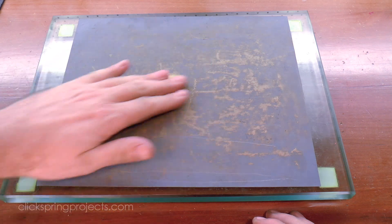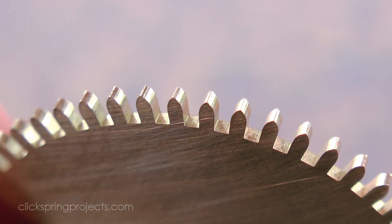Dealing with the burrs is straightforward with material like brass, a bit of abrasive paper knocks them off easily.